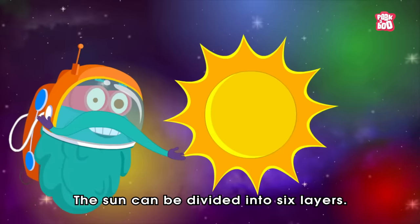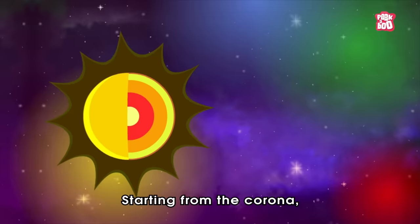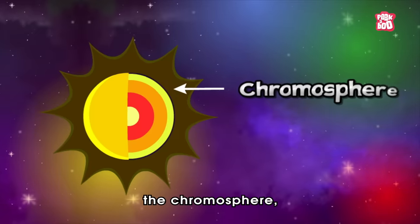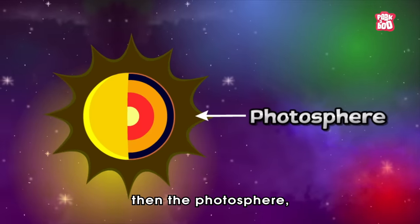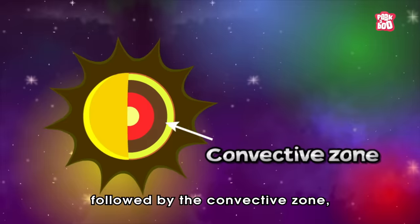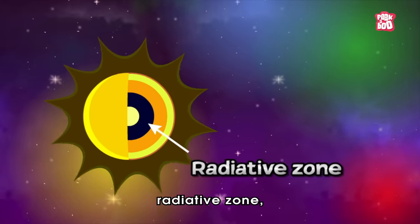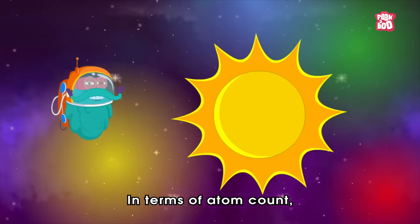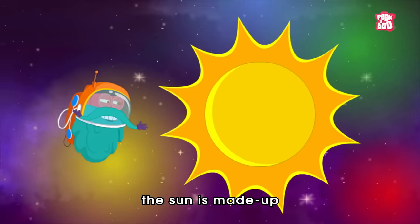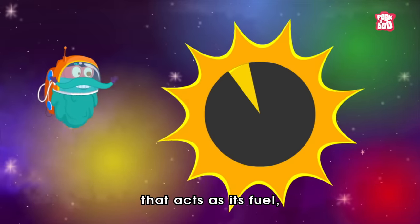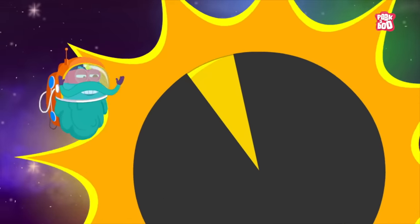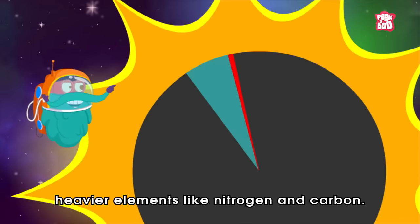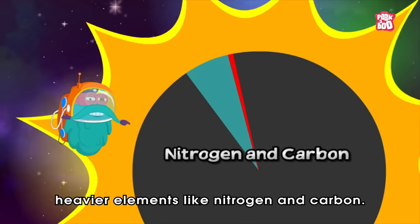The sun can be divided into six layers, starting from the corona, next comes the chromosphere, then the photosphere, followed by the convective zone, radiative zone, and finally, the core. In terms of atom count, the sun is made up of 91% hydrogen that acts as its fuel, 8.9% helium and 0.1% heavier elements like nitrogen and carbon.